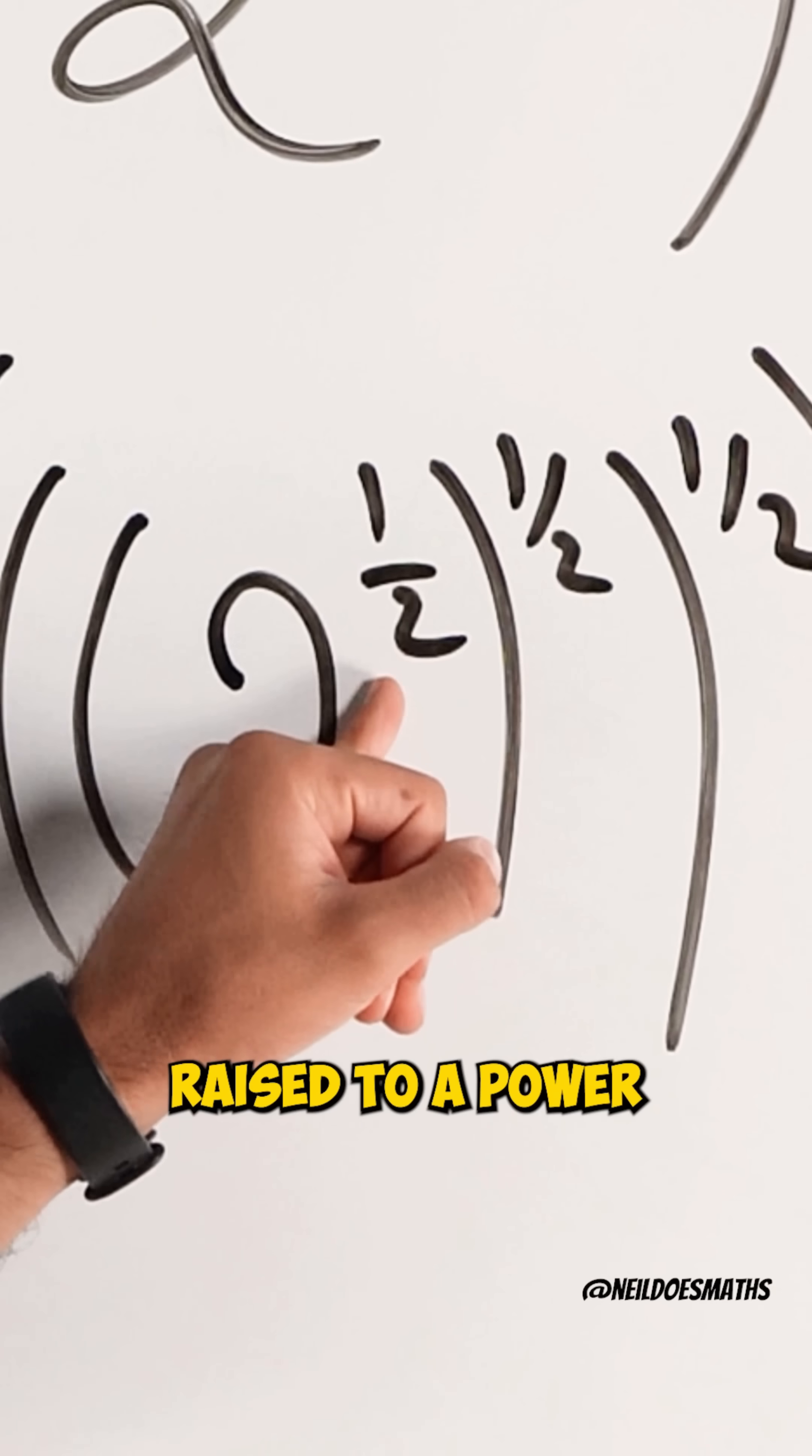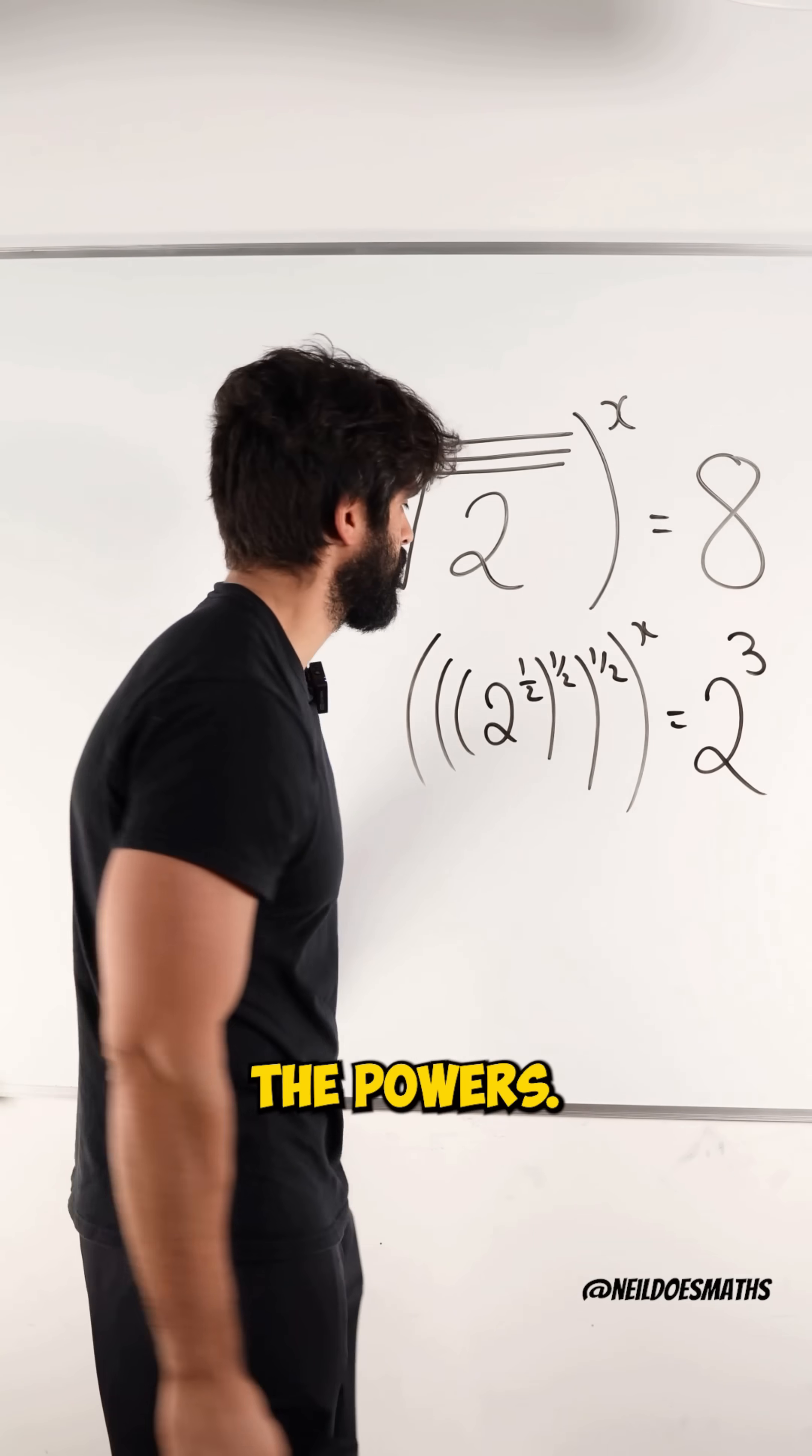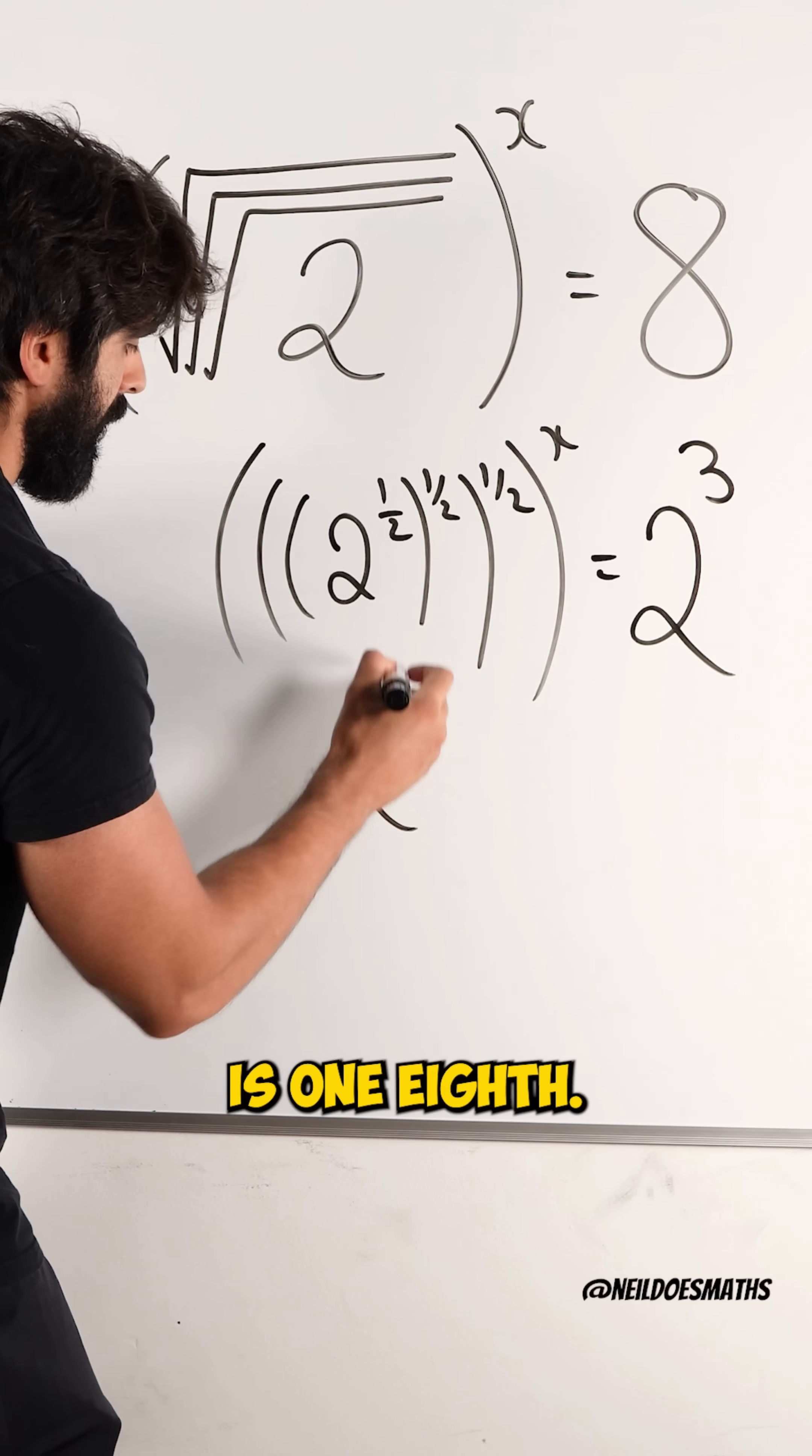Now, what happens when we have a number raised to a power, raised to a power, to a power, to a power? We just multiply the powers. A half of a half of a half is 1 eighth.